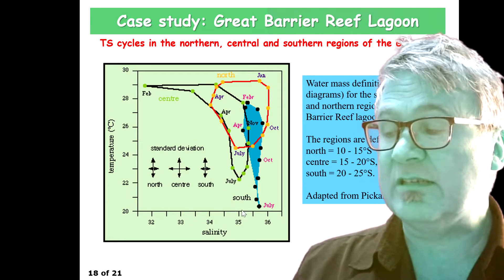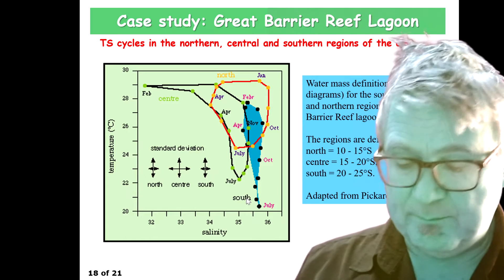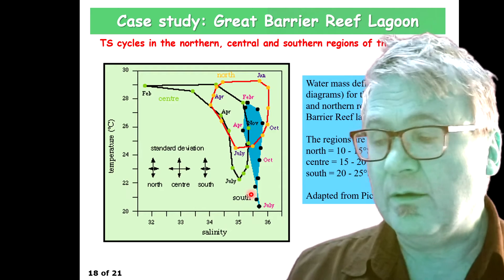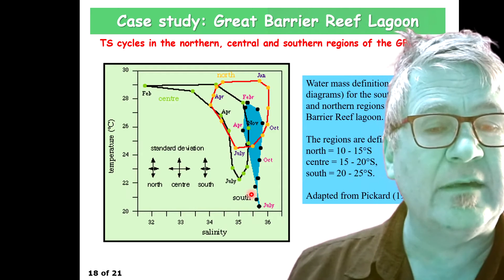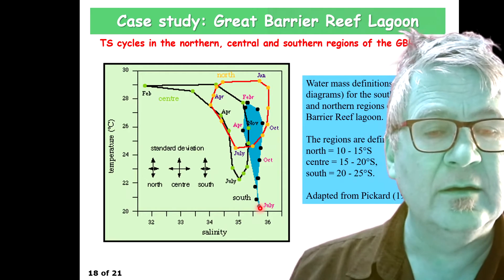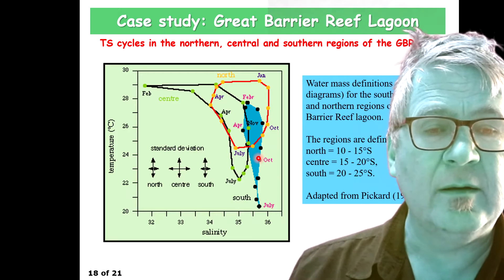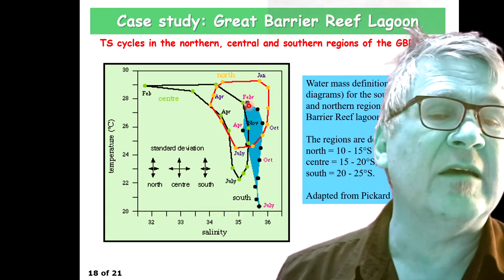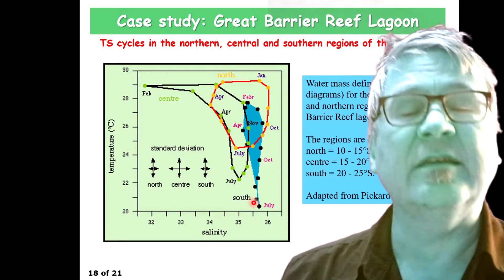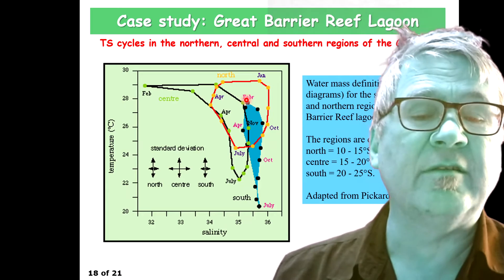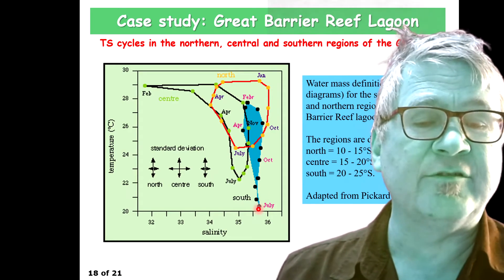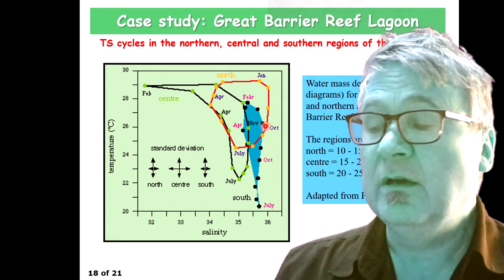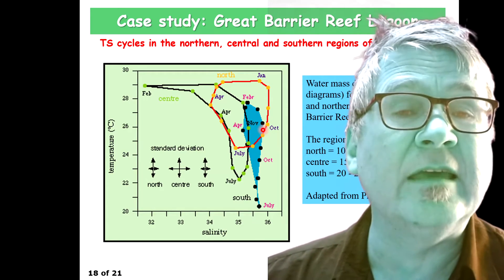Look at the southern region. You can see information about July, then October, then February. It moves in a counterclockwise sense — monthly values. The warmest month is February, the coldest month is July. You get a little bit of variation in salinity, which is similar to what you find in the ambient open ocean.